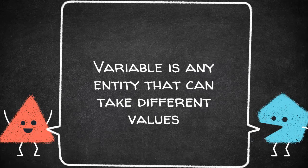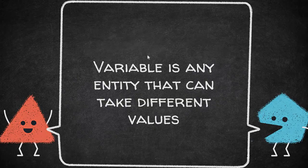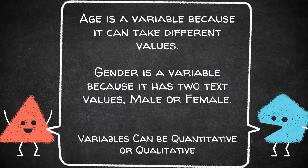So what is a variable? A variable is any entity that can take different values. A variable is not a constant because a constant always has one fixed value — it never changes, but a variable ever changes. For example, age is a variable because it can take different values. You have elderly people, different kinds of age groups — young ones, adolescents, adults. So age is a variable and it is a numeric variable, because age is expressed in terms of numbers.